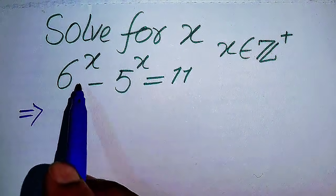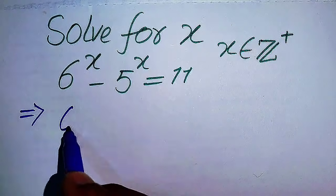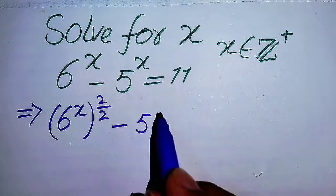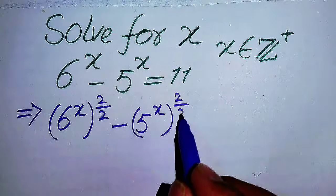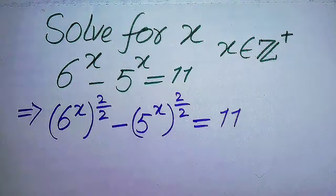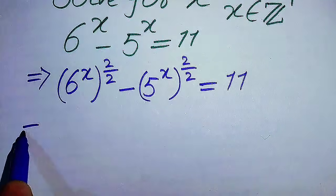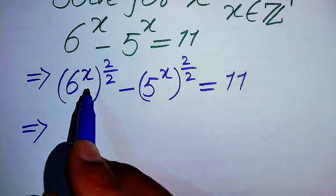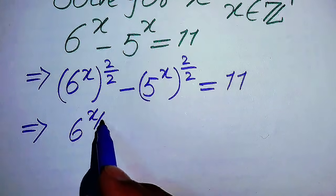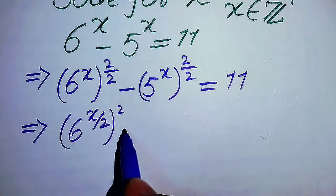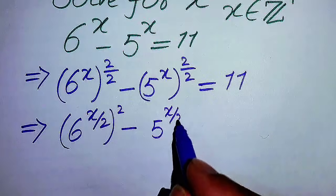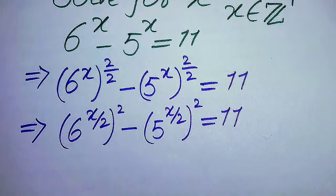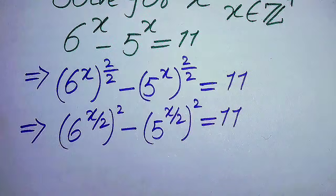The very first thing we are going to do is multiply and divide the exponent of both terms by 2. It will be written as 6 to the power of x, with its whole exponent as 2 over 2, minus 5 to the power of x with its whole exponent as 2 over 2, equals 11. We then move the 1 over 2 inside the term — when you have exponent to an exponent, they multiply — giving us 6 to the power of x over 2, whole squared, minus 5 to the power of x over 2, whole squared, equals 11.